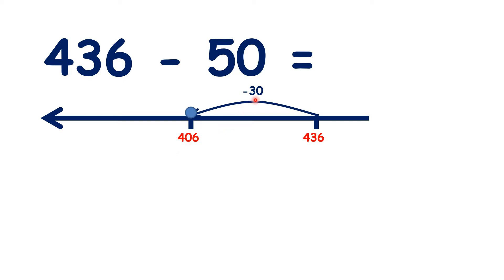But we've subtracted 30 here, and we want to subtract 50, so let's subtract 20 more. That takes us to 386. So if we know that 40 minus 2 is 38, we know that 406 minus 20 is 386. So because we're subtracting tens, the units digit stays the same.